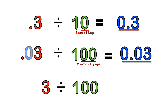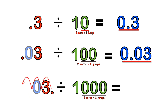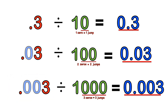For 3 divided by 1000, the same method applies. Step one: introduce the decimal point. Step two: three zeros equals three jumps to the left. One jump over the three, then two blank jumps each introducing a zero. So we have point zero zero three, or 0.003. So 3 divided by 1000 equals 0.003. We have three zeros in the answer, which means we divided by three zeros in the question.